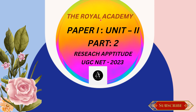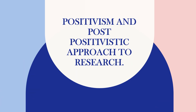This is Royal Academy, Paper 1, Unit 2, Part 2 — Research Aptitude for UGC NET 2023. In this class, we are going to see positivism and the post-positivist approach to research.